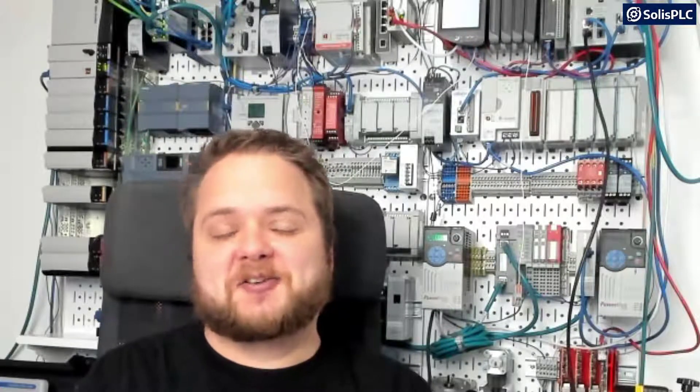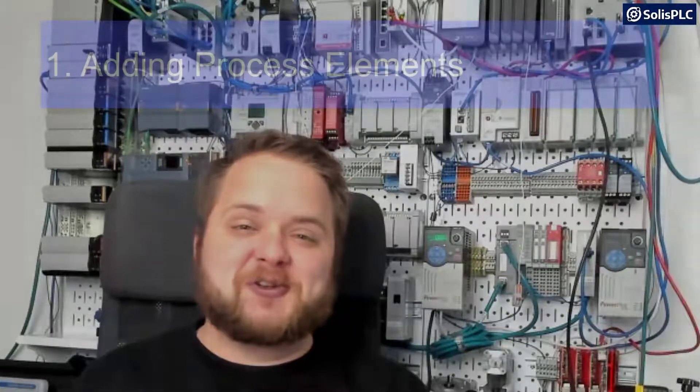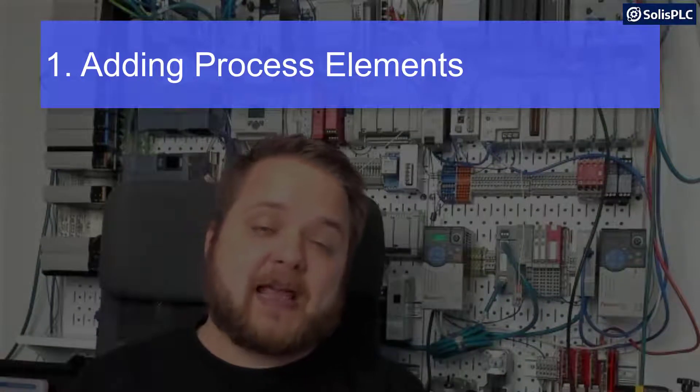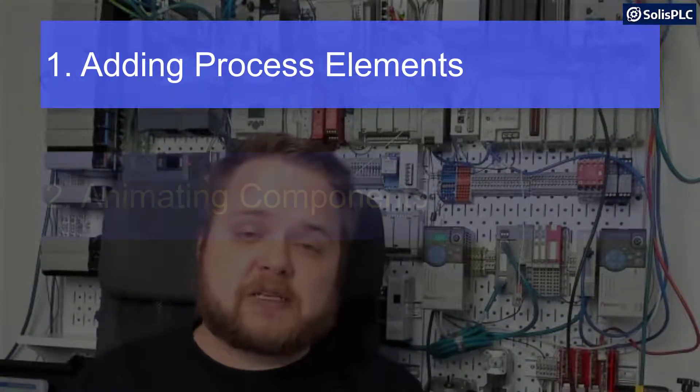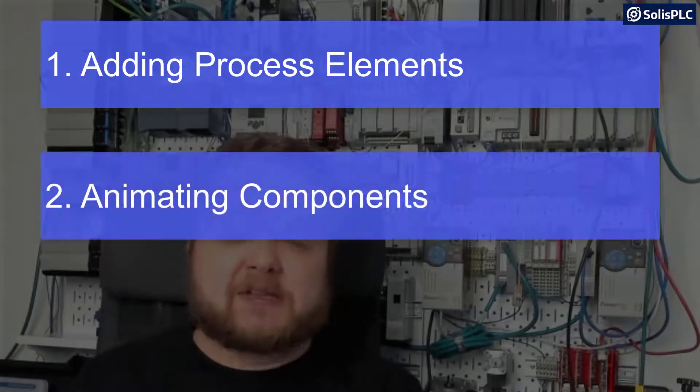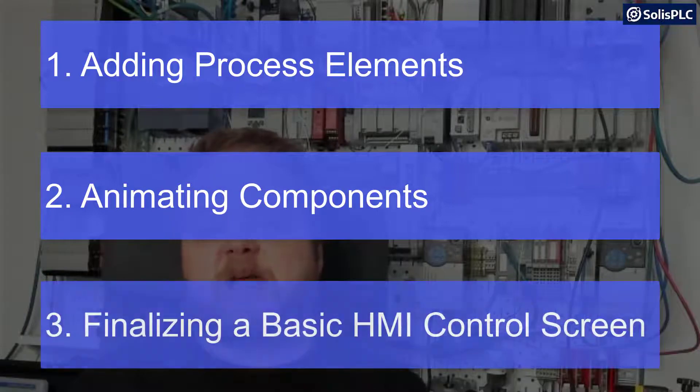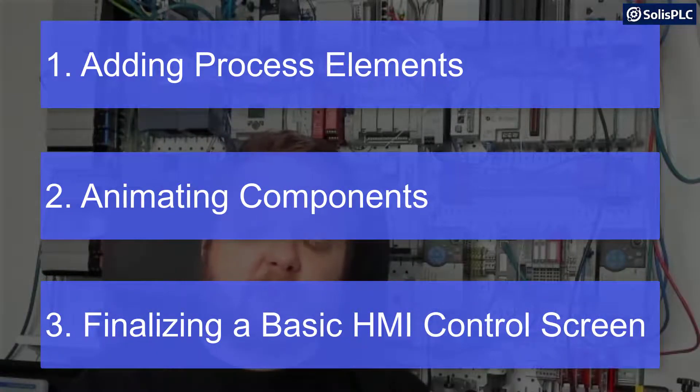In the past we've added a few very simple buttons and very simple indicators. I wanted to illustrate the power of HMIs and add a few process elements such as tanks, valves, and pipes, and then do some basic animations on those elements based on the program that we wrote in an earlier episode and show you how to animate some of those objects in TIA Portal. Without any further delay, let's get started.